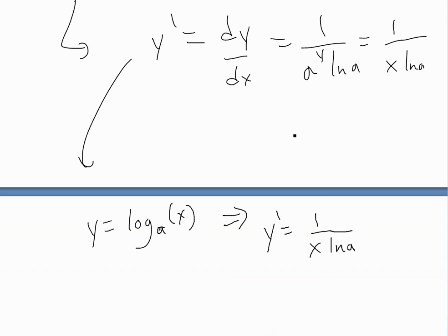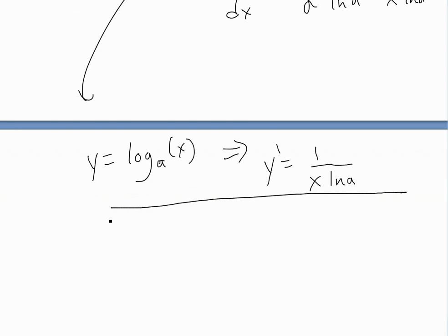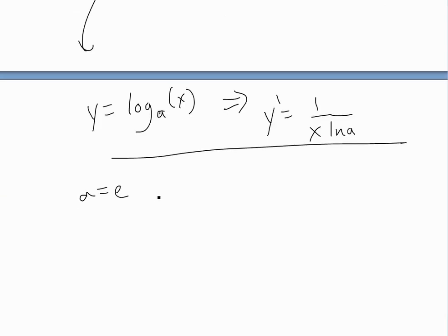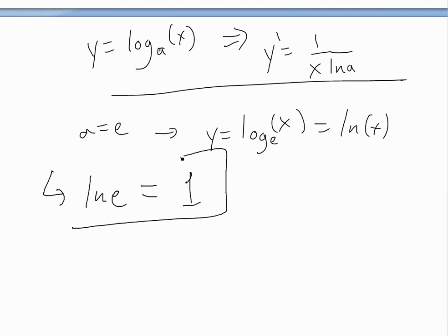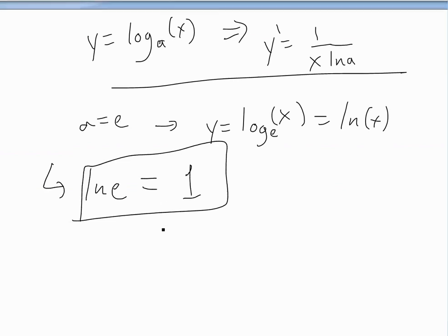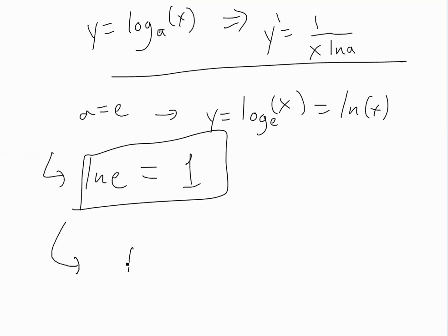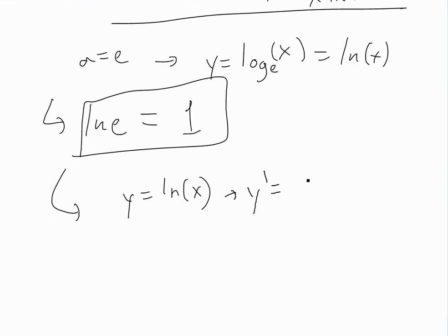Now for the special case where a = e: y = log_e(x) is just the natural log, ln(x). Plugging into our formula, ln(e) = 1, so everything simplifies nicely. The derivative of y = ln(x) is just y′ = 1/x.